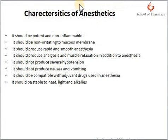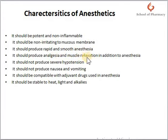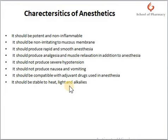Now, what are the characteristics of an ideal anesthetic? When calculating the dose and properties of anesthetic agents to be used for a patient during surgery, certain characteristics must be considered. It should be potent and non-irritating to the mucous membrane. It should produce rapid and smooth anesthesia, as well as analgesia and muscle relaxation. It should not produce hypotension, nausea, or vomiting, and it should be compatible with all adjuvant drugs used in anesthesia. Finally, it should be stable to heat, light, and alkali.